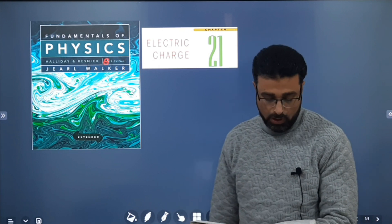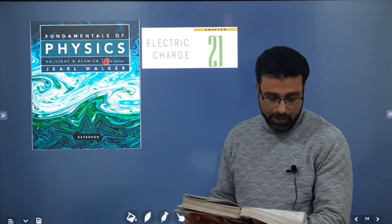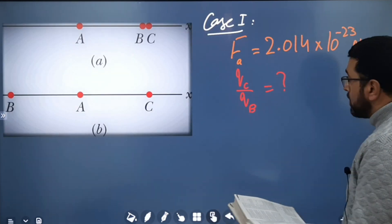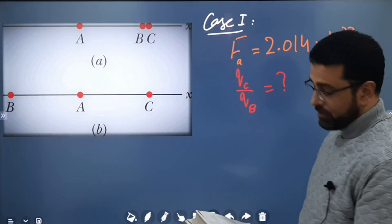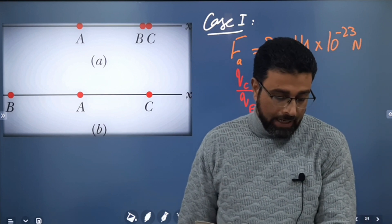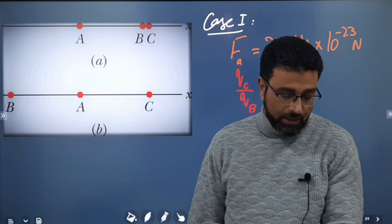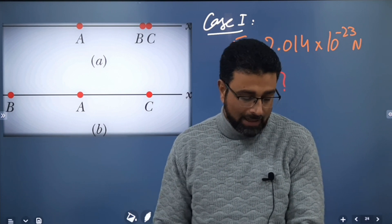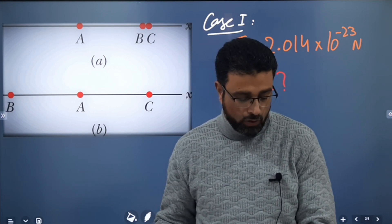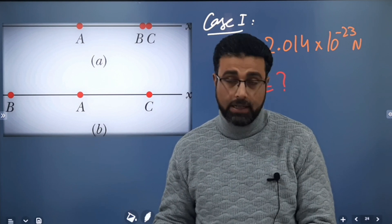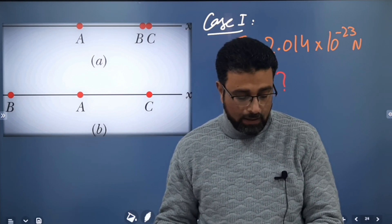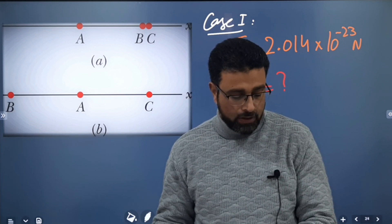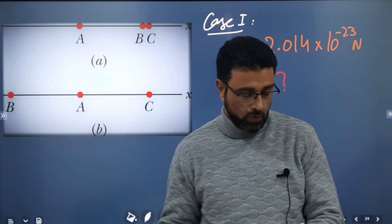Problems on Coulomb's law. I'll read out the question. In figure A, three positively charged particles are fixed on an x-axis. Particles B and C are so close to each other that they can be considered to be at the same distance from particle A. The net force on particle A due to particles B and C is 2.014 × 10⁻²³ newtons in the negative direction of the x-axis.